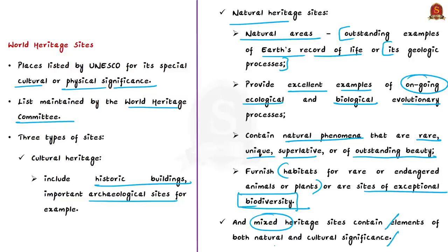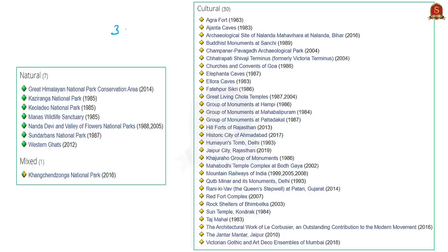With respect to India, there are 38 sites inscribed under the UNESCO World Heritage List. Among the temples and religious sites inscribed are: the Sun Temple of Konark, the Group of Monuments at Mahabalipuram, the Group of Monuments at Hampi, Churches and Convents of Goa, Khajuraho Group of Monuments, Group of Monuments at Pattadakal, Buddhist Monuments at Sanchi, the Great Living Chola Temples, and the Mahabodhi Temple Complex at Bodh Gaya.